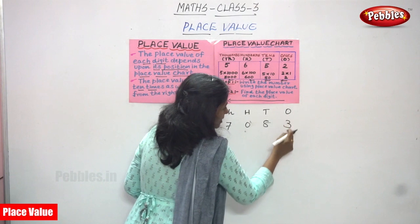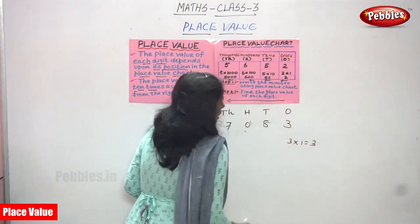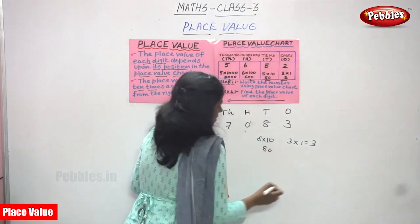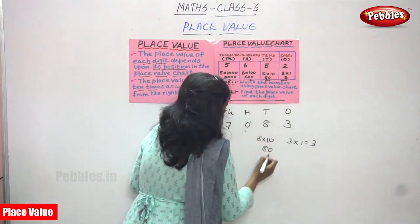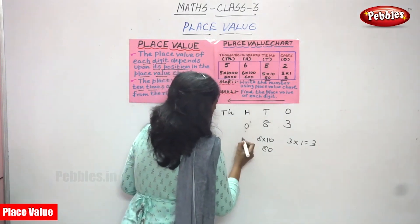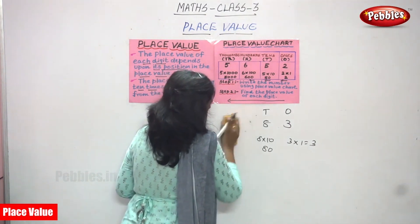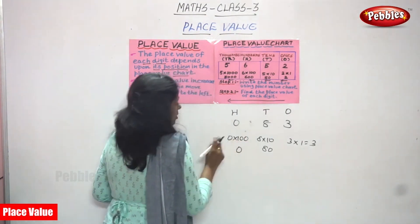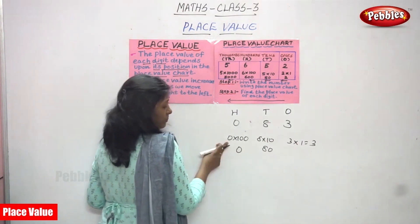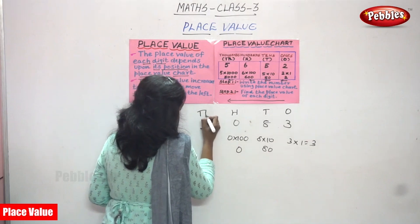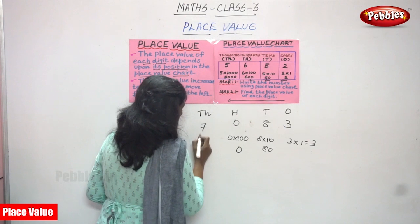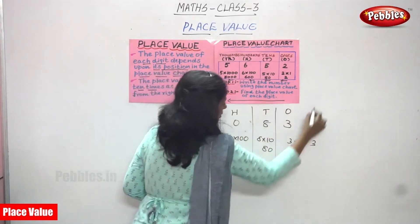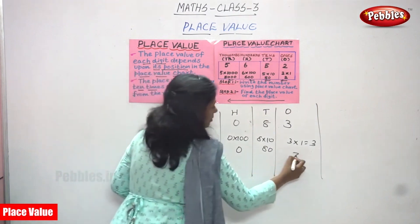The number written in the chart is 7, 0, 8, 3. So 3 is in the ones place: 3 into 1 gives 3. 8 is in the tens place: 8 into 10 gives 80. 0 is in the hundreds place: 0 into 100 gives 0 — any number multiplied by zero gives zero. 7 is in the thousands place: 7 into 1000 gives 7000.